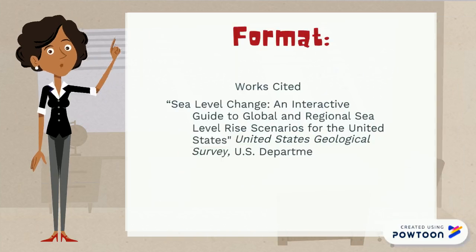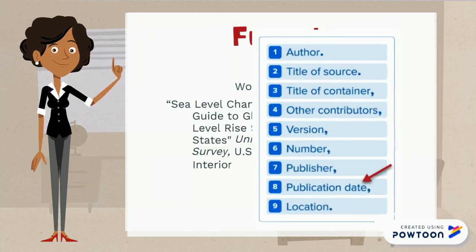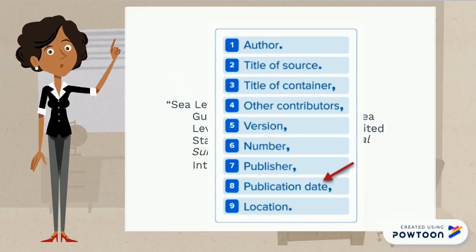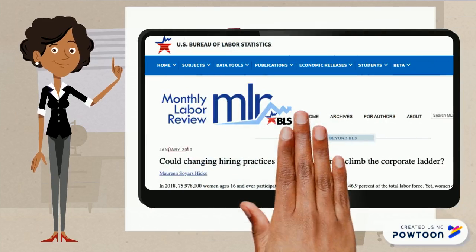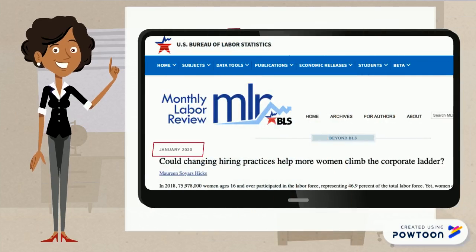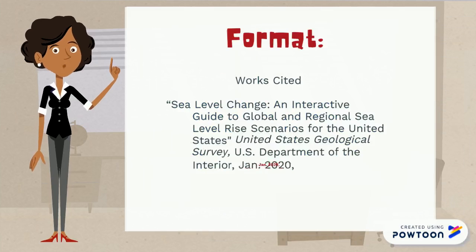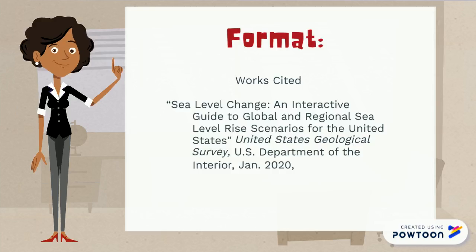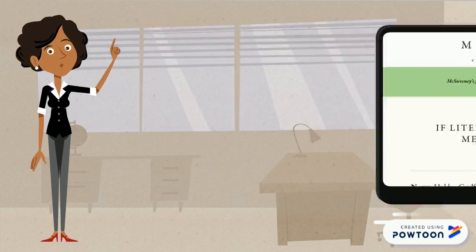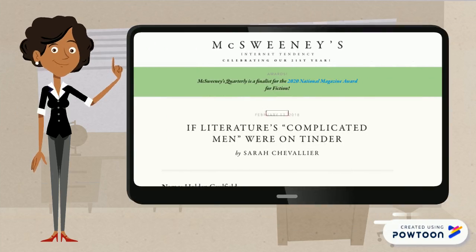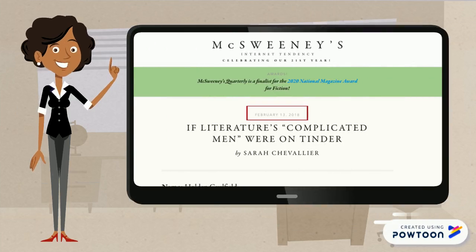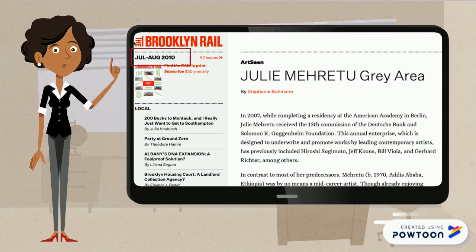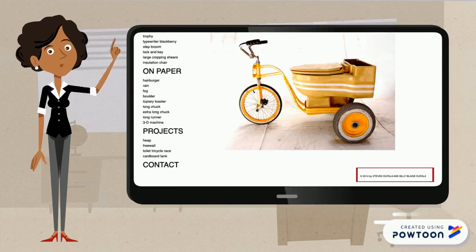For publication date, you want to use the date the specific thing that you are citing was published, if it's available. You may have to look around the web page to locate this date. It can be next to the title or the author information, or it may be at the header or the footer of the page.